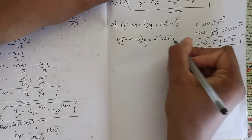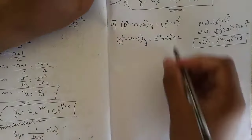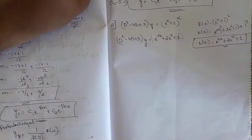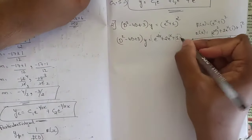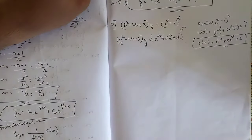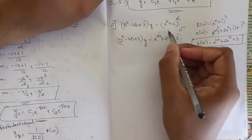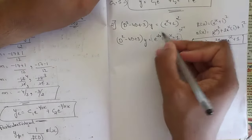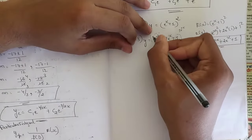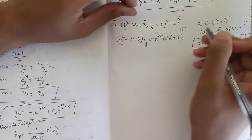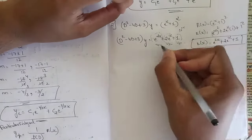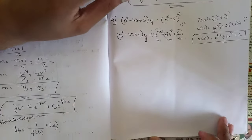We have three terms in r(x). The last term is a constant, which as noted earlier can be written as 1·e^(0·x) with a = 0. To find the particular integral yp, since we have three terms, we find yp1, yp2, and yp3 separately and then sum them: yp = yp1 + yp2 + yp3.